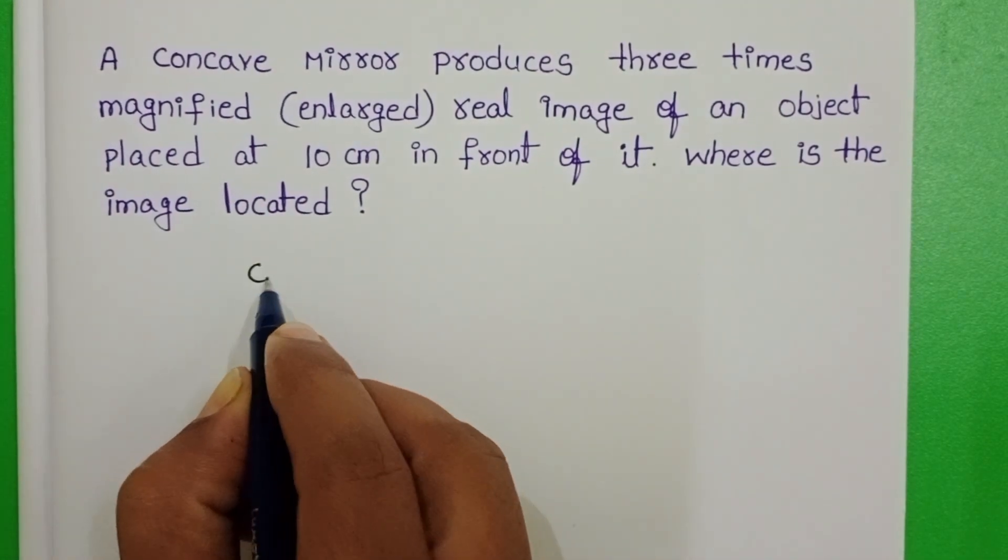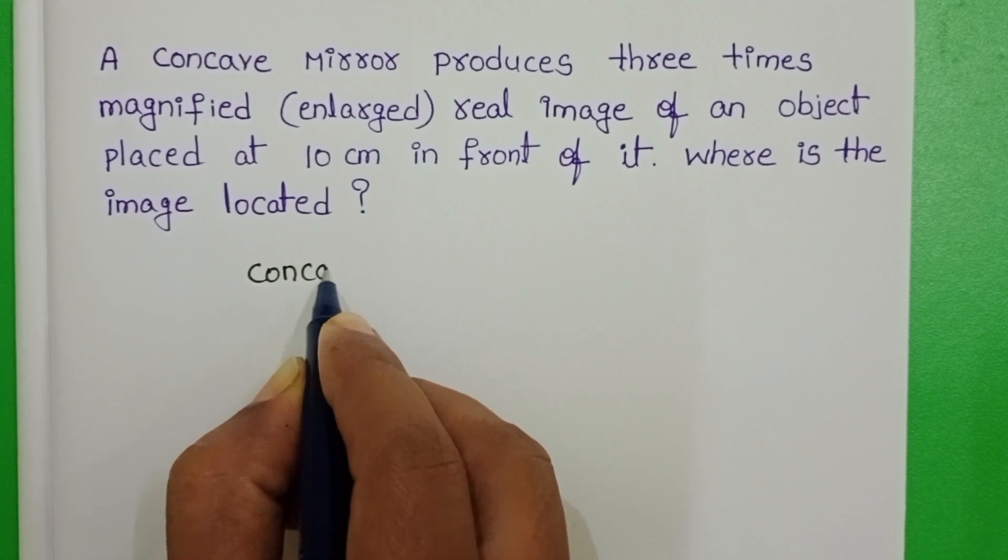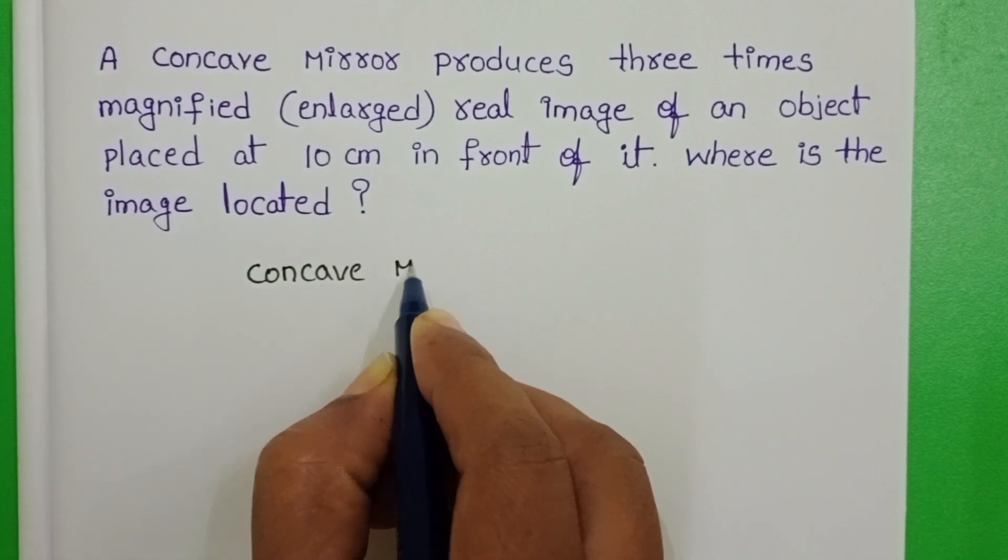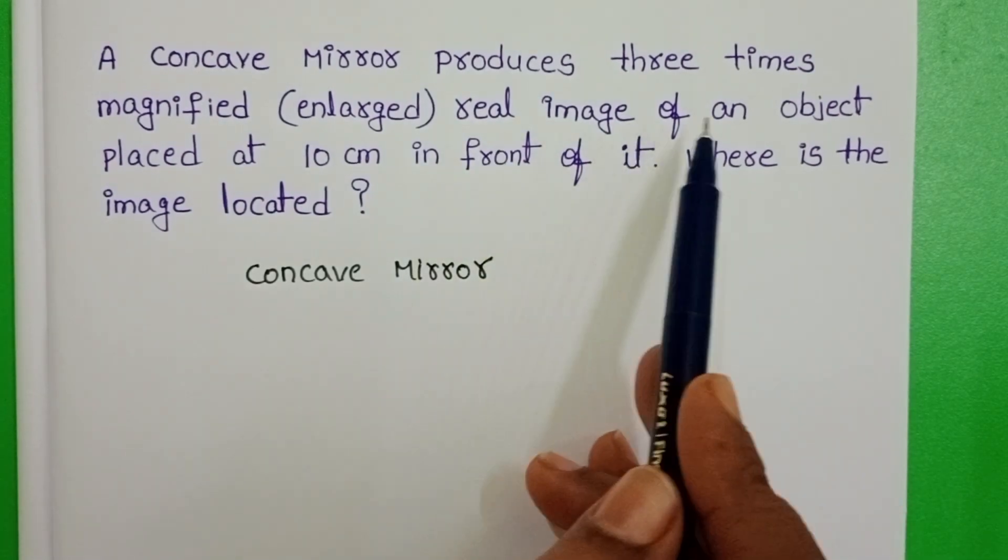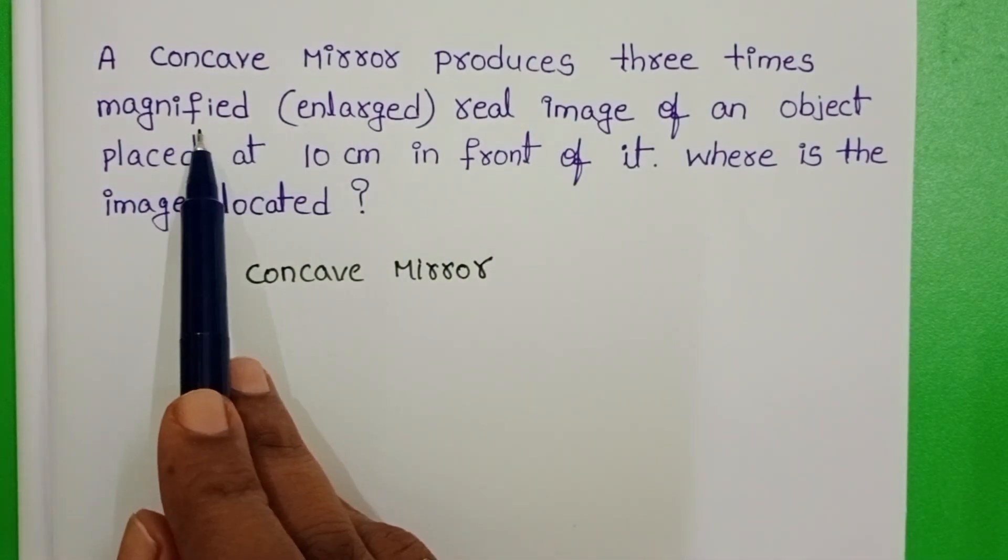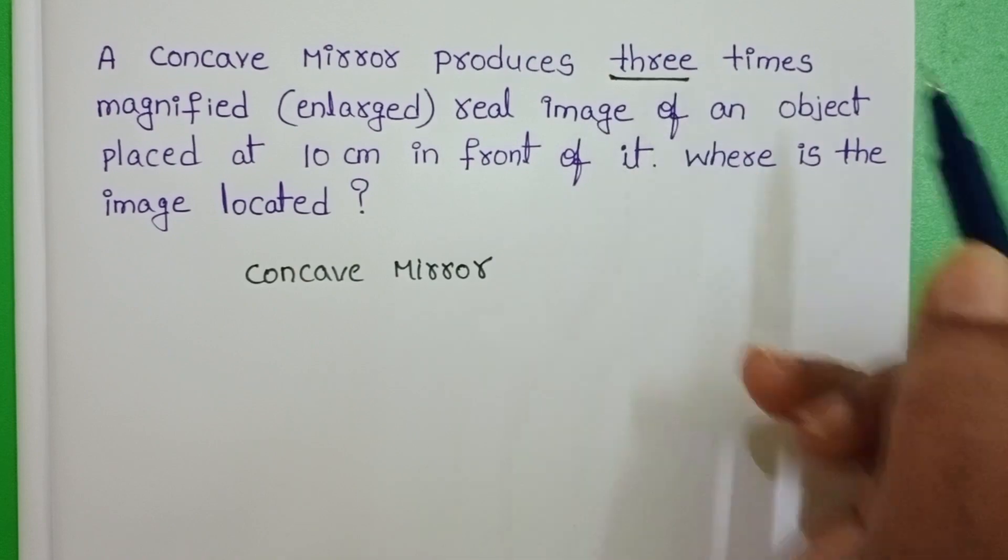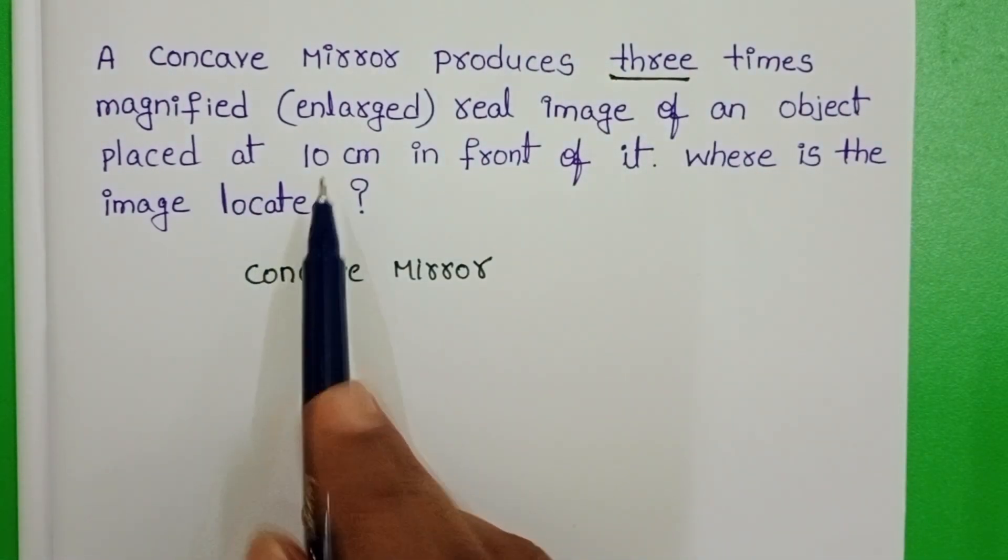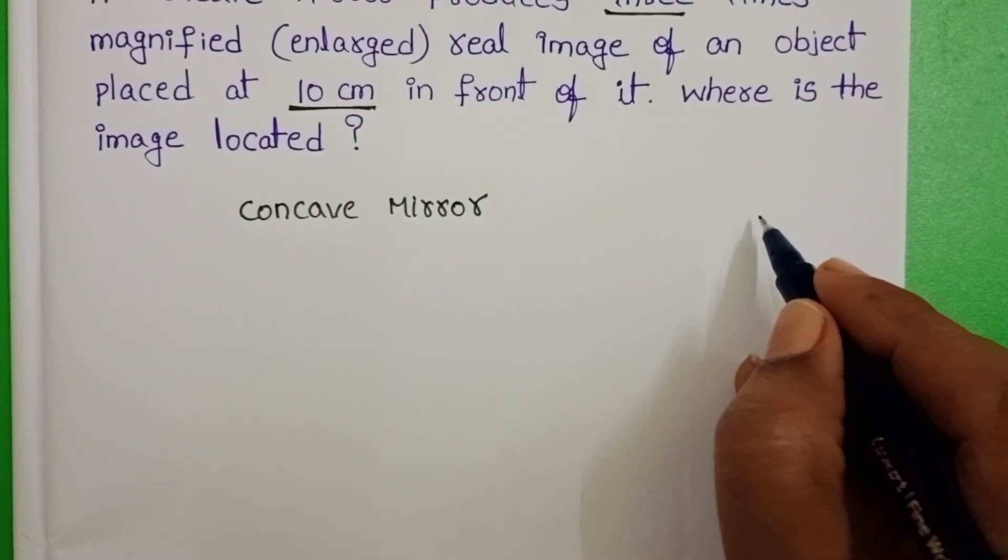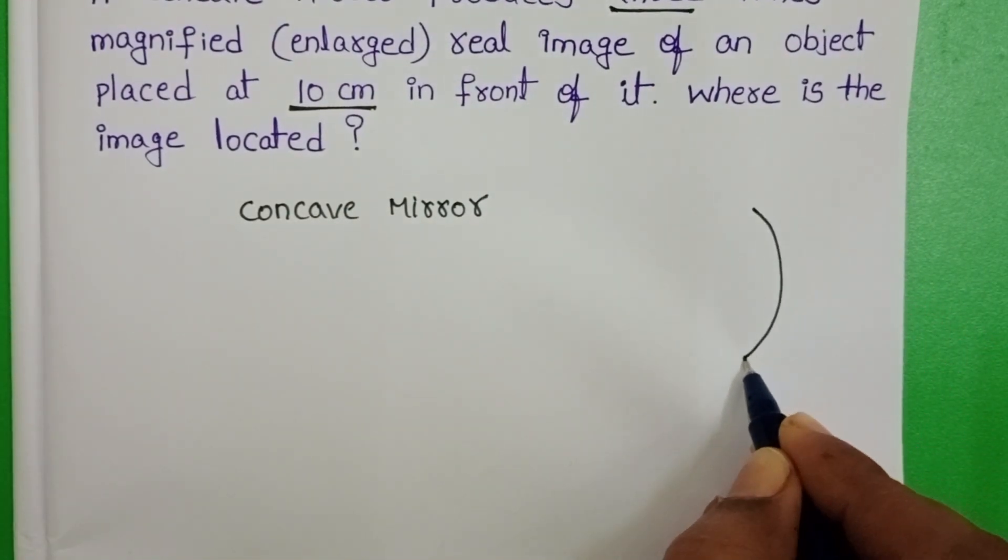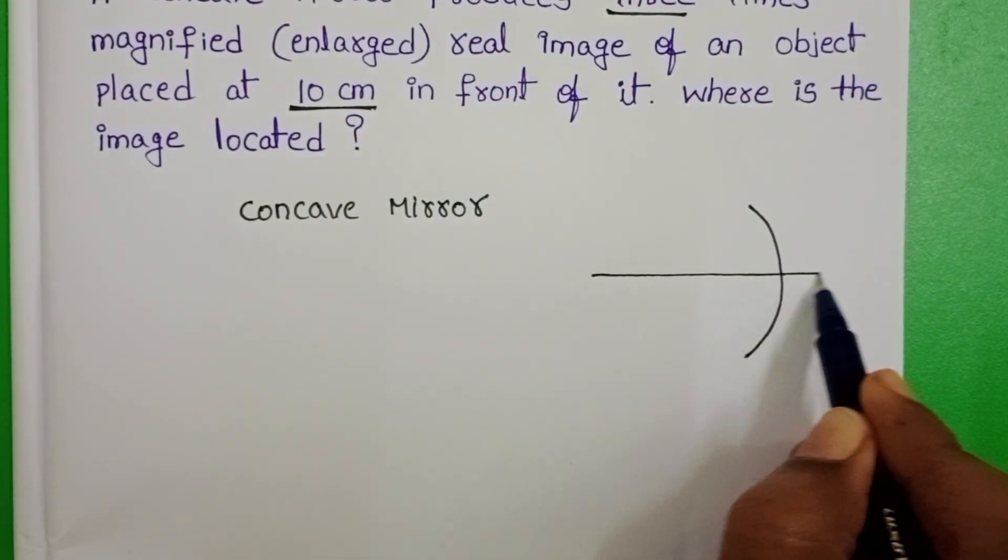The given mirror in the question is concave mirror. And also we know magnification is 3. Object distance from the mirror is 10 cm. But in this question the main important thing is to understand about the sign conventions.